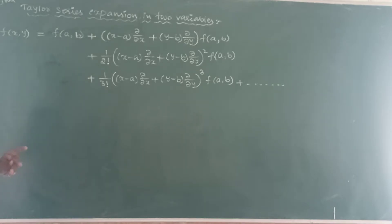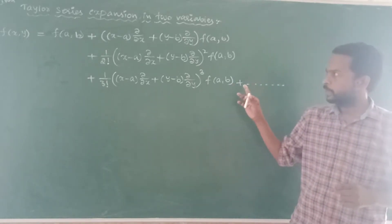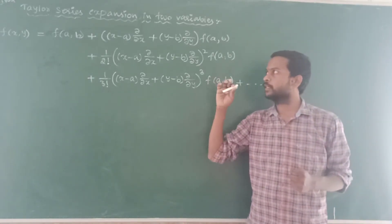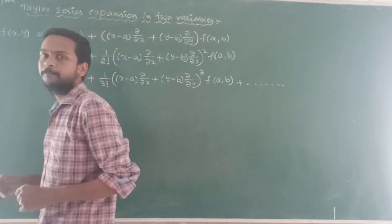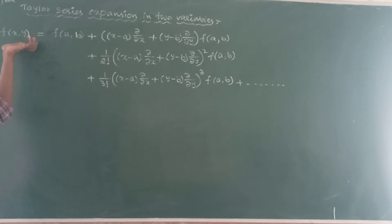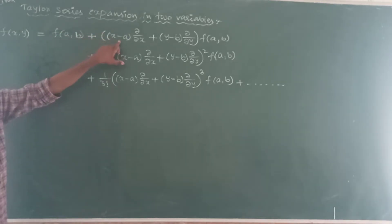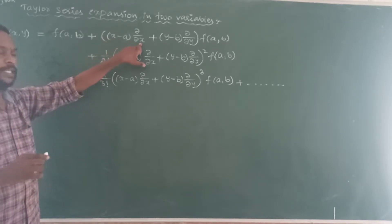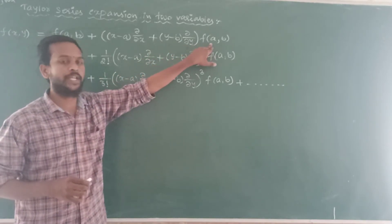This formula is very, very important and you may get a long version or short version question on Taylor series expansion. This is a very important topic and problem. So let me show how to remember the Taylor series expansion in two-variable form. f of x comma y — the function will be given. f of a comma b is the point given in the question. So f of a comma b, plus x minus a into ∂/∂x, plus y minus b into ∂/∂y, evaluated in terms of a comma b.